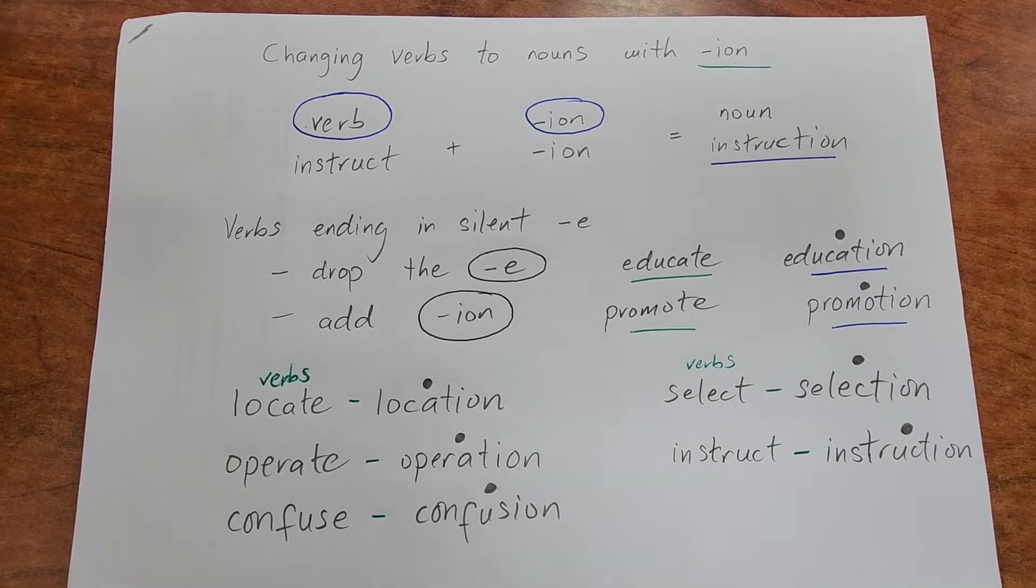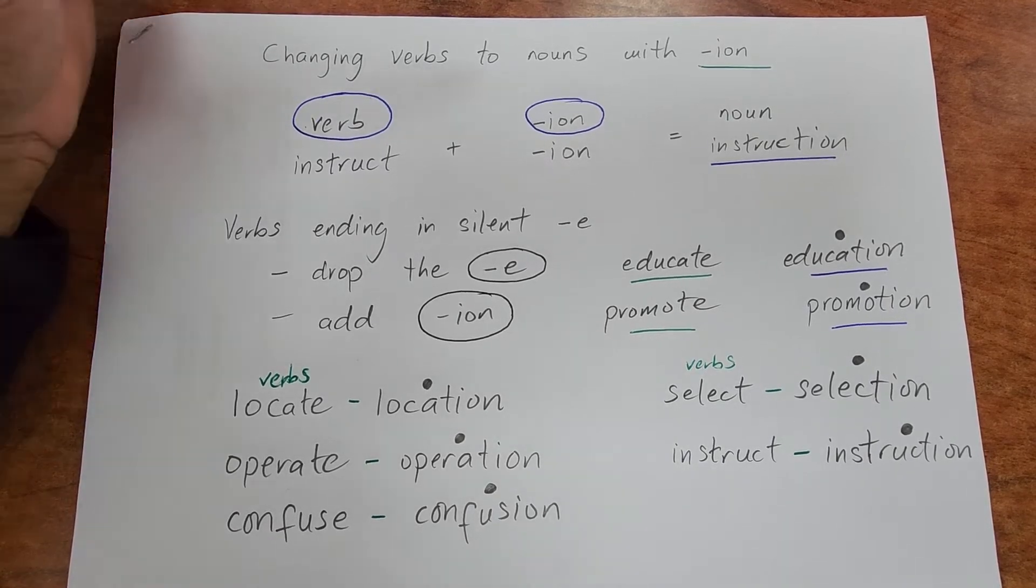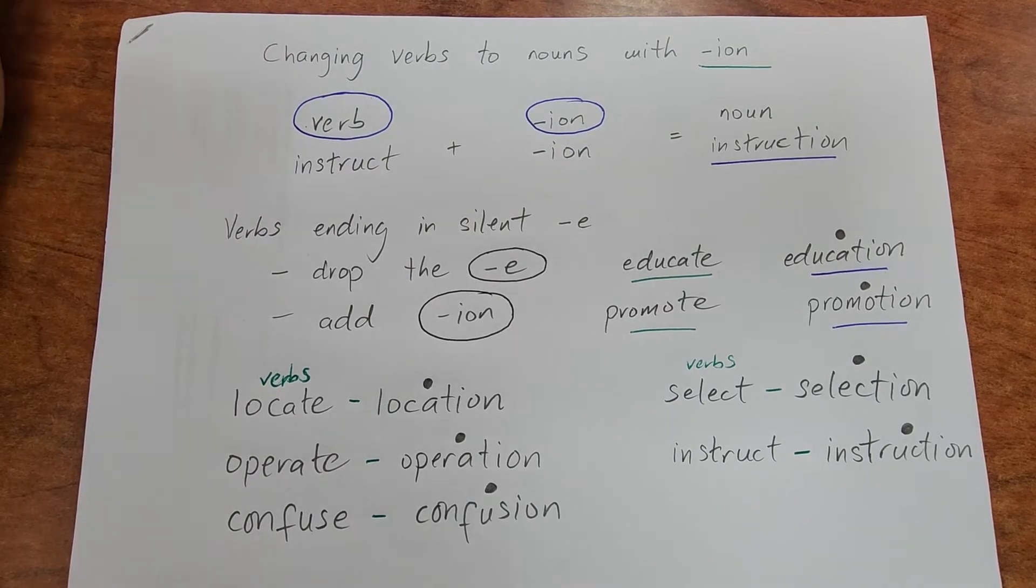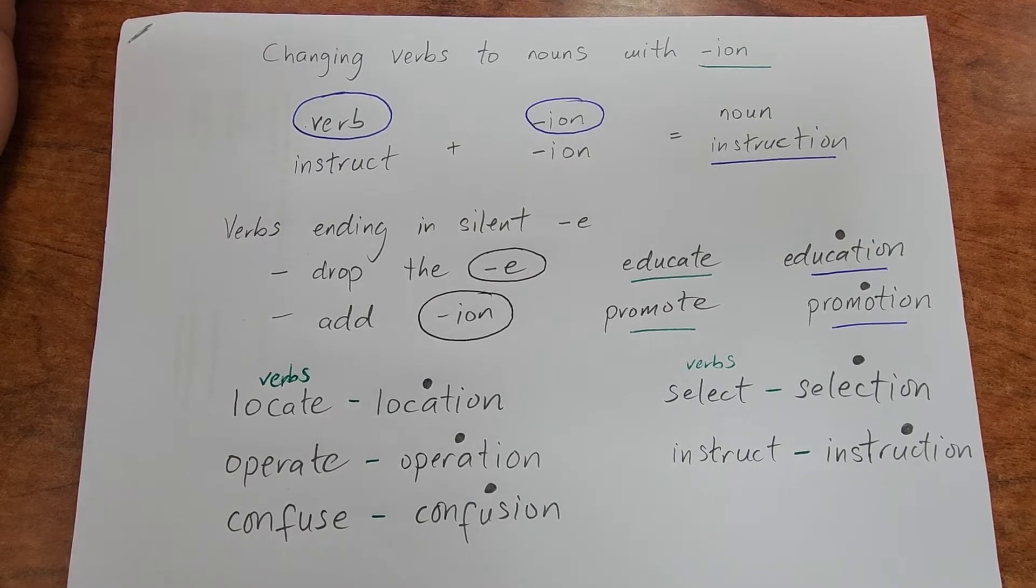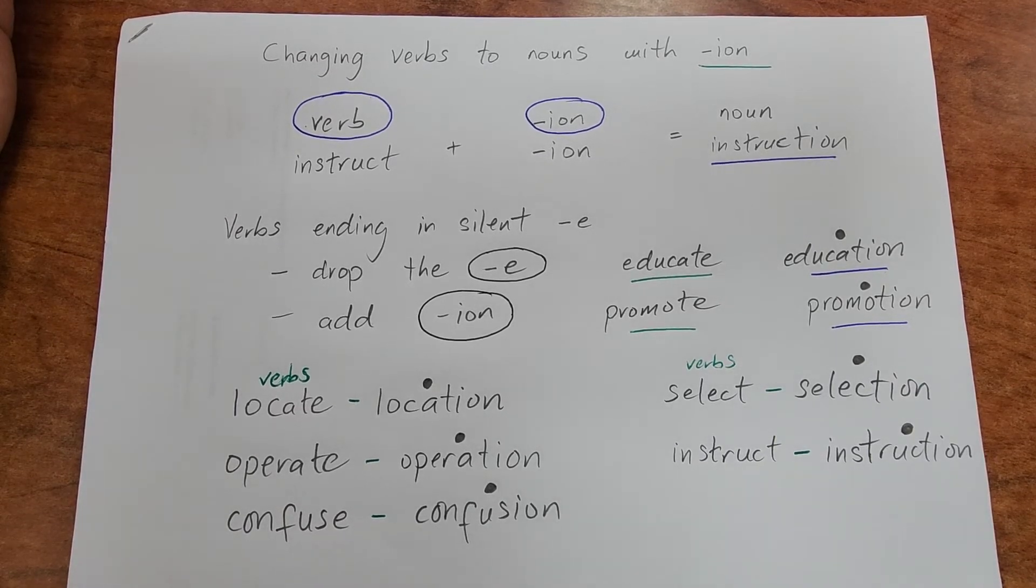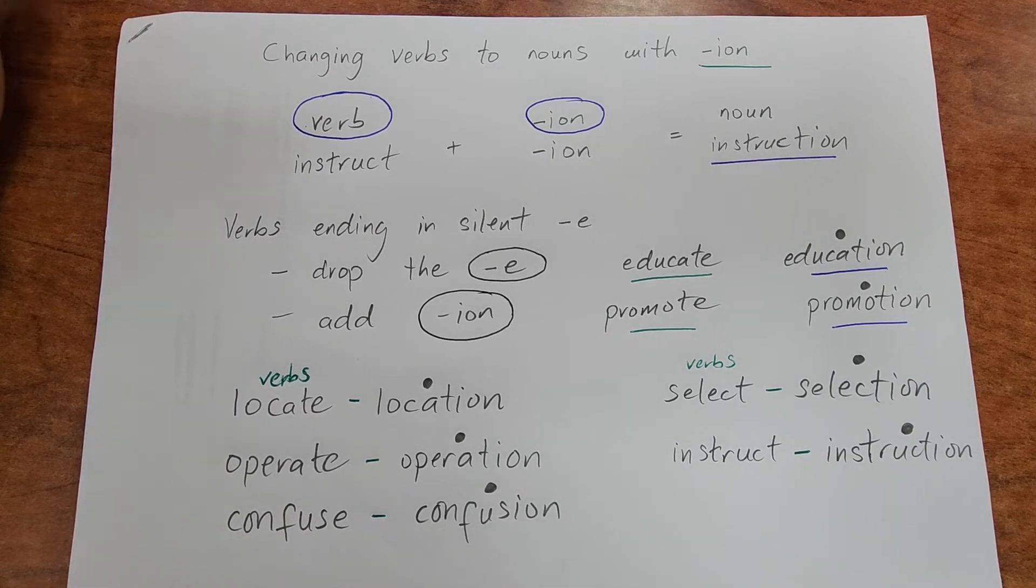Changing verbs to nouns with -ion is extremely crucial for your IELTS preparation because in the test you'll have various words that are verbs which have been altered to become nouns. So please follow carefully.